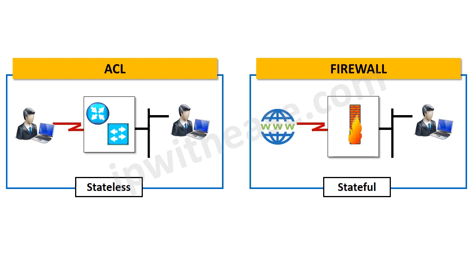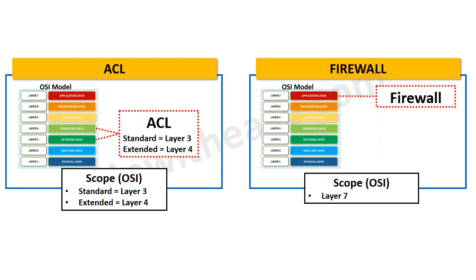The second parameter of comparison is stateful or stateless inspection. ACL cannot perform stateful inspection, so it is limited to stateless inspection of traffic. On the other hand, firewalls have a state table, which is an essential feature. They therefore perform stateful inspection. On a side note, the state table is responsible for maintaining the state of every connection coming through the firewall.